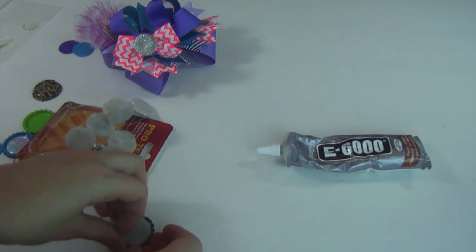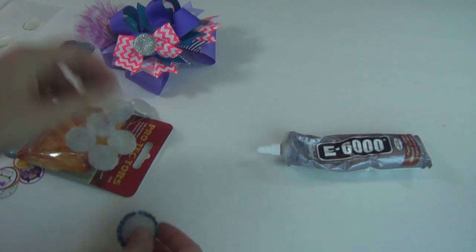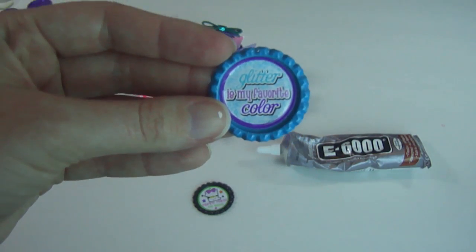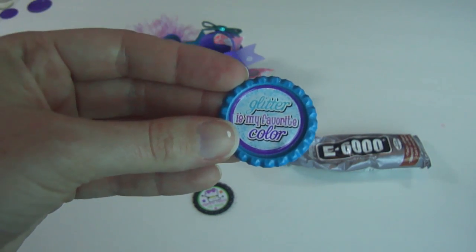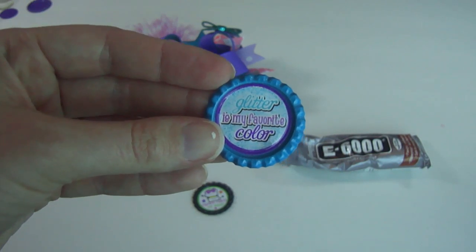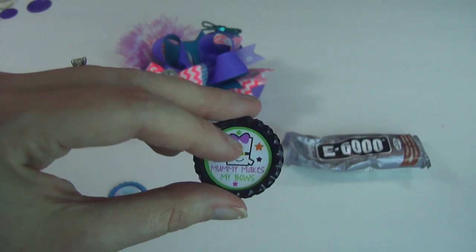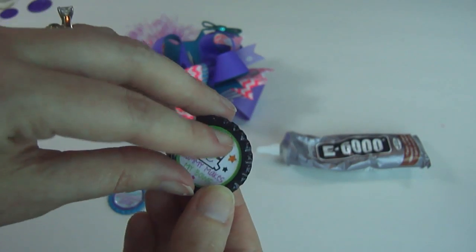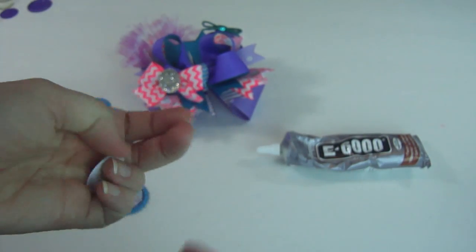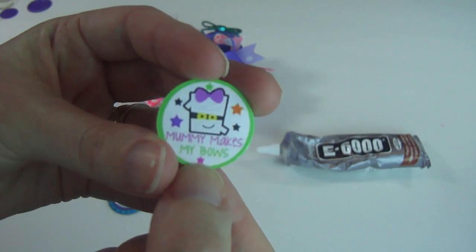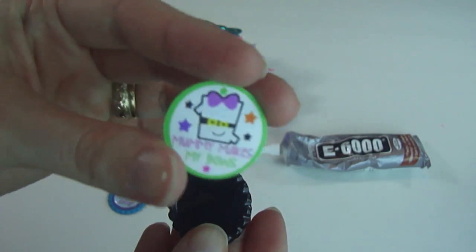Now, we can get our glue and get started adding our bottle cap. All right, this is actually the bottle cap I'm going to use for the bow. It says, glitter is my favorite color. But I'm going to go ahead and do a quick one for you, just to show you how to get them going. All right, so here's my image. This is so cute. It says, my mummy makes my bows. I think I might make this for Kennedy.